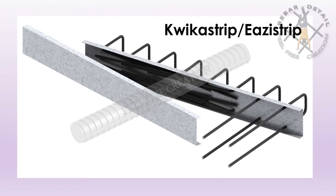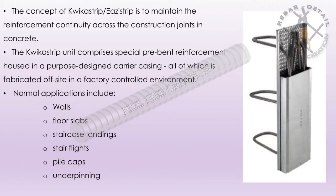Now we see quickestrip, easostrip, or pull-out bars. Point 1: the concept of quickestrip or easostrip is to maintain the reinforcement continuity across the construction joints in concrete. Point 2: the quickestrip unit comprises special pre-bent reinforcement housed in a purpose-designed carrier casing, all of which is fabricated off-site in a factory-controlled environment. Point 3: normal applications include walls, floor slabs, staircase landings, stair flights, pile caps, underpinning, etc.